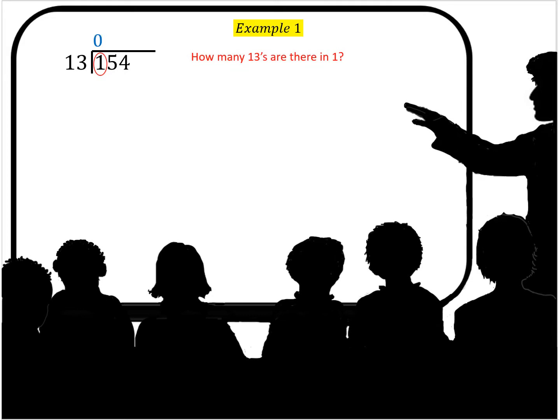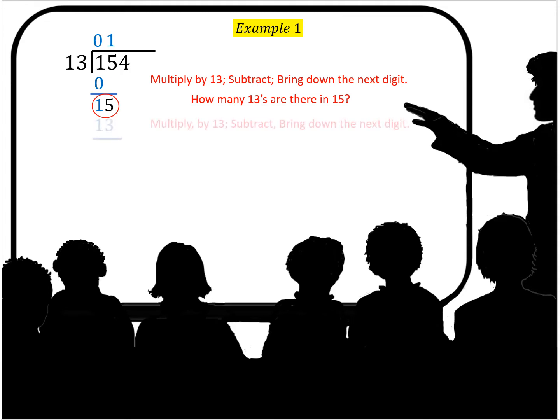The first question is how many 13s are there in one? Well there's zero. So when you multiply zero times 13 you get zero. Now you subtract, you get 15 because you subtract zero from one that's one, you bring down the five.